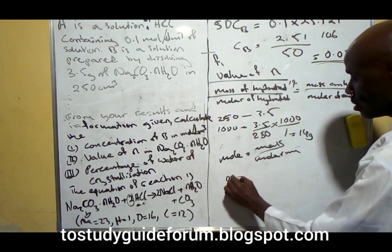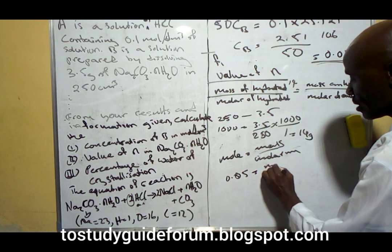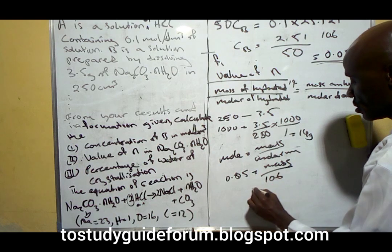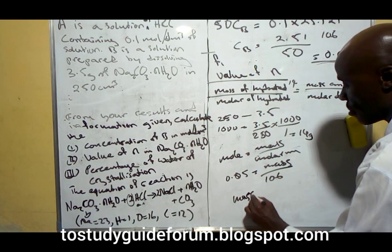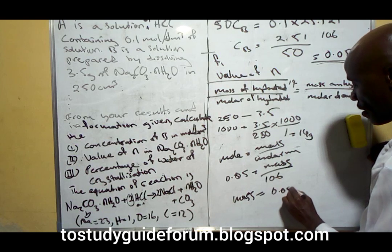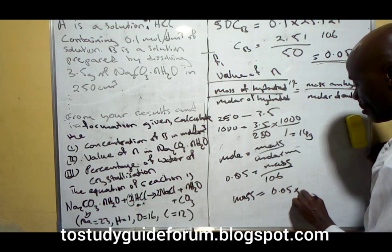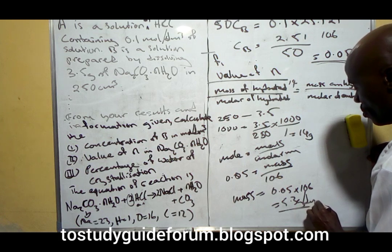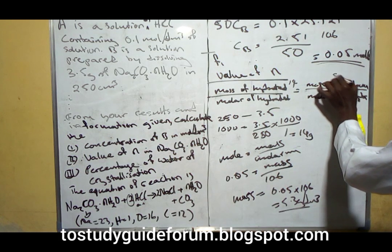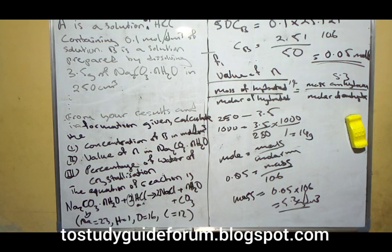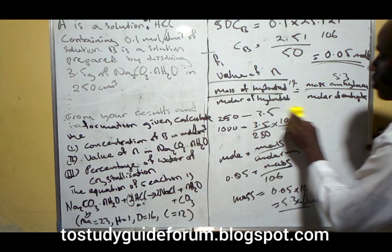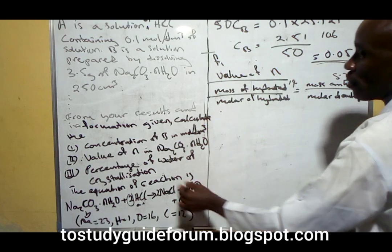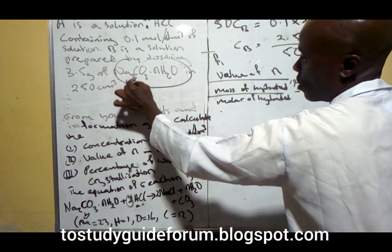The molar mass of the anhydrous salt is 106, and the mole is 0.05. Then mass will be 0.05 times 106, which equals 5.3 grams per dm³.